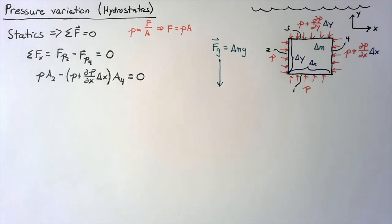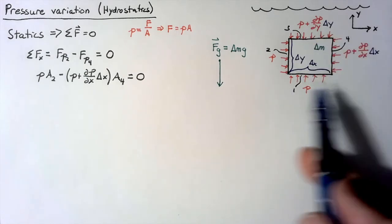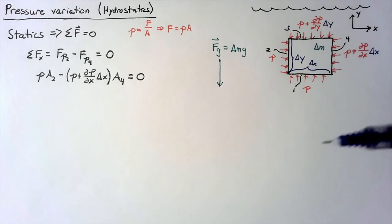Okay, so now we need to define what exactly these areas are. Well, this thing that we're looking at is a box. It has a width delta x, a height delta y, and then a depth delta z that we're not really seeing.